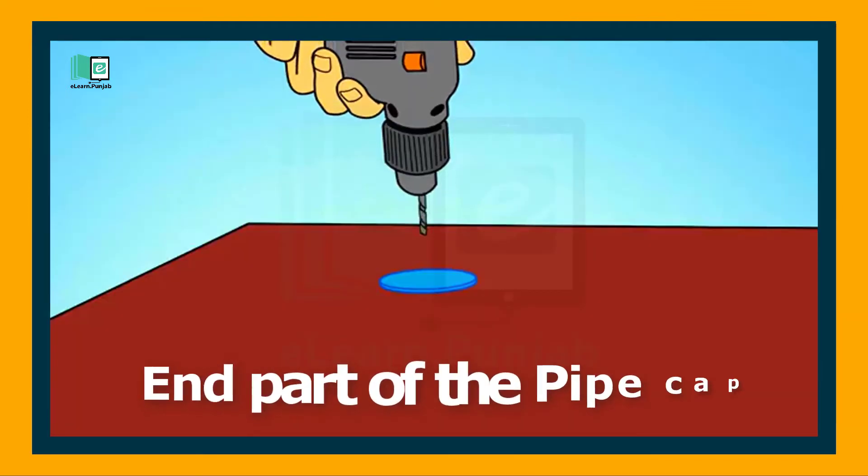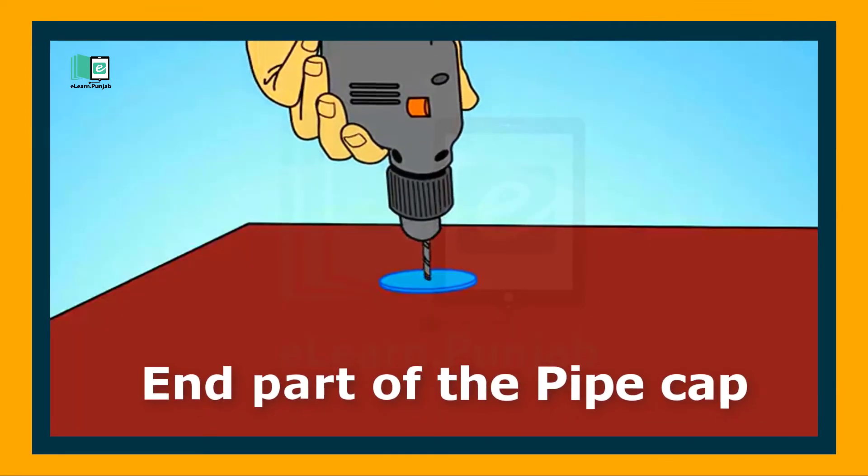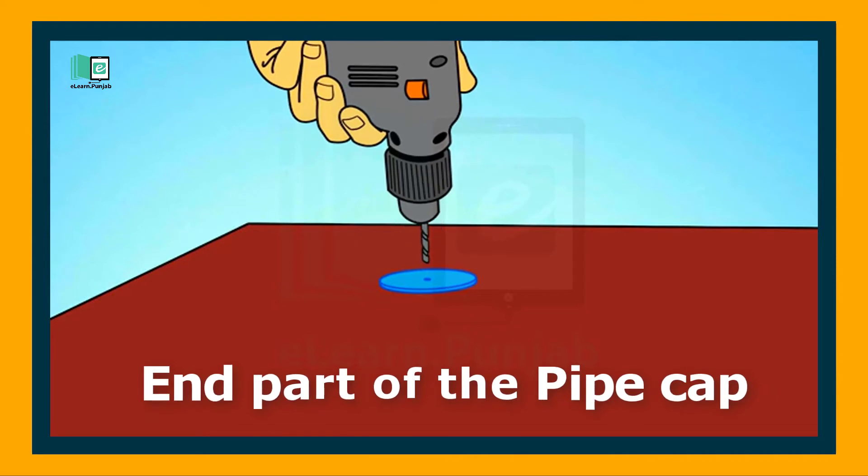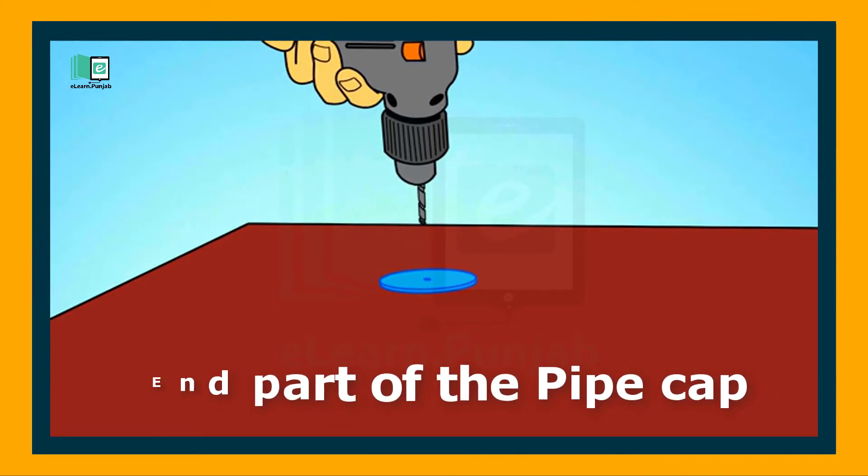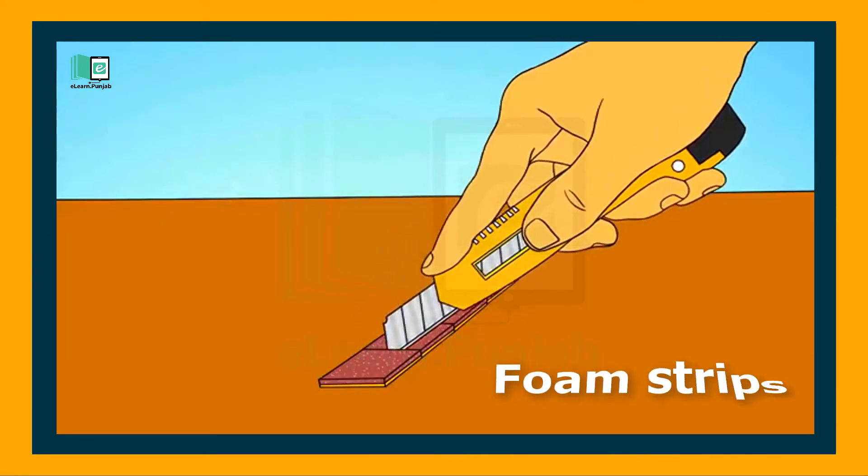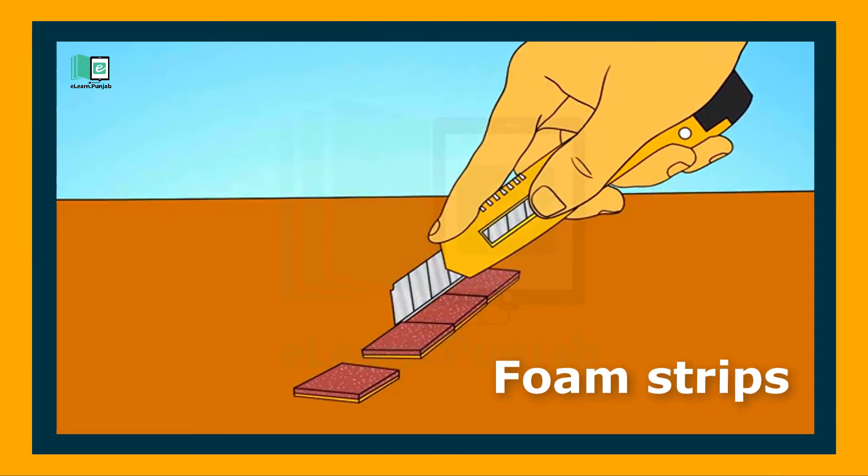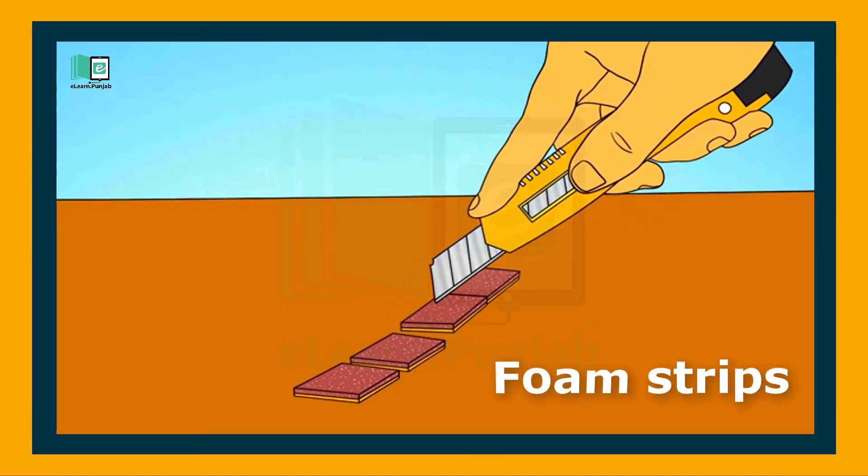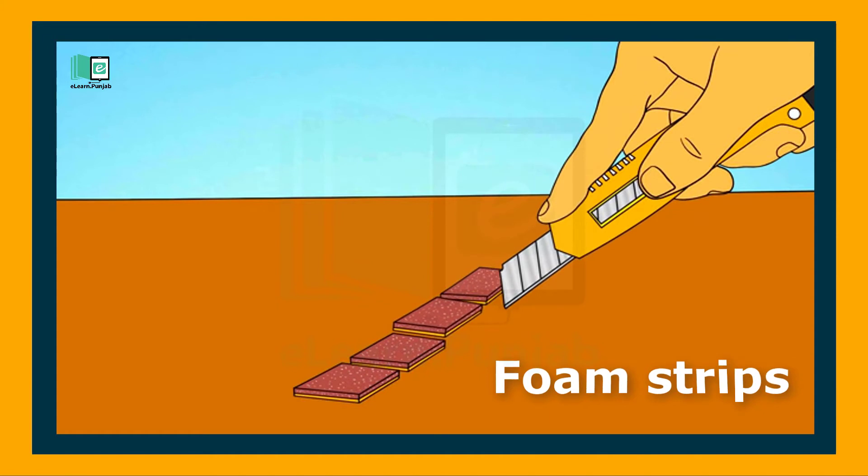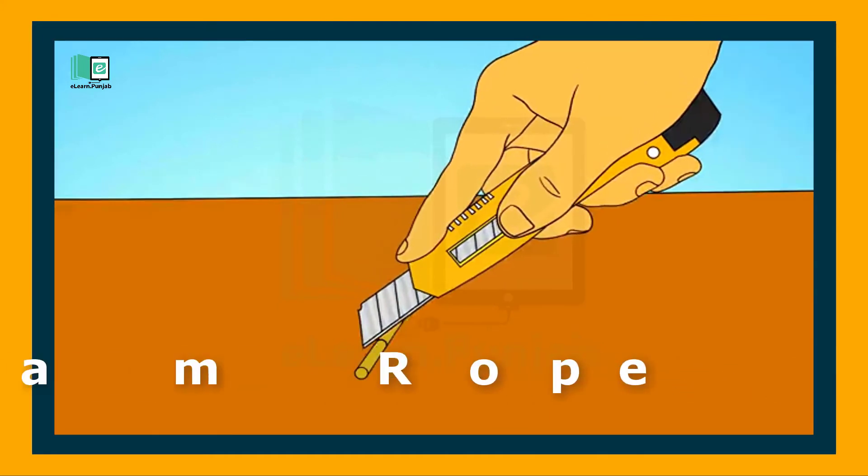Prepare the end cap of the pipe with a drill machine. Prepare the foam strips. Prepare the foam rope.